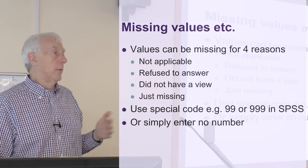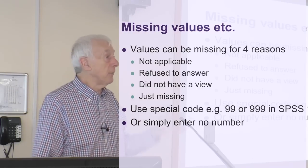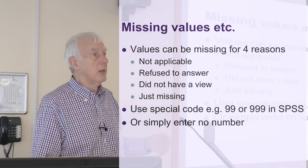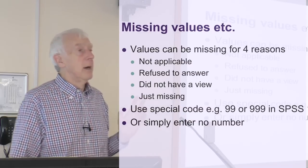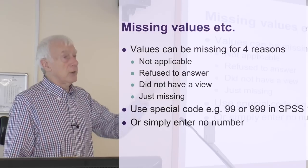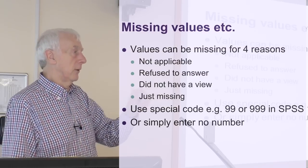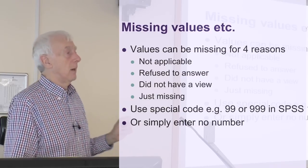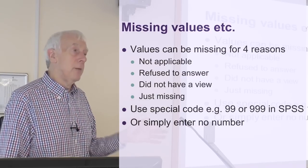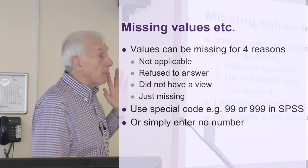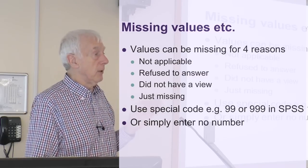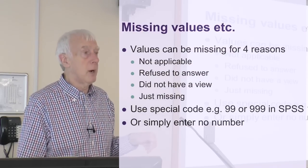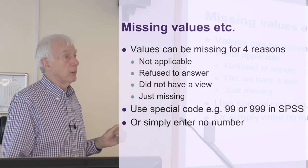For example, you might have a few questions about families and ask: do you have any children? If you don't have any children, jump over the next few questions and carry on after question 23. If you do, answer the next question about your children — how many children do you have, what ages are they, and so on. Of course, that won't apply if you don't have children, so that might be why there's a missing value — the question simply doesn't apply to that person.